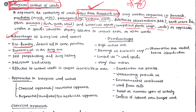It is economical in the long run, though not in the short run — for short-term economy, herbicide application is preferred. It is also self-perpetuating: once you release a bio-agent such as an insect, it can reproduce itself, so we do not need to apply it again and again. It also preserves biodiversity, as releasing insects does not harm biodiversity.